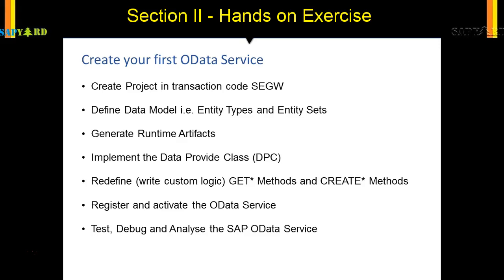These will have standard functions and methods. We need to redefine those methods to write custom logic in them. We'll write logic in the get entity and get entity set methods. We'll also do some POST operations — create entity and create entity set — which will create entries in the database tables in SAP. Finally, we'll register and activate the OData service so you can use and test it.